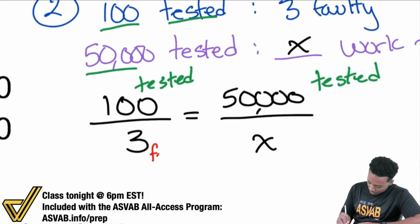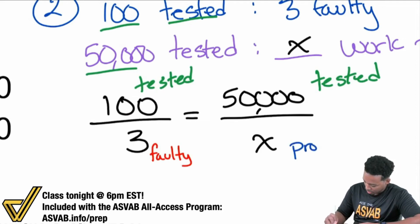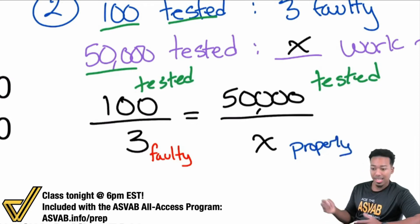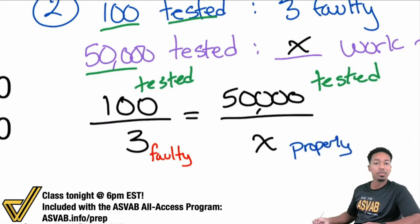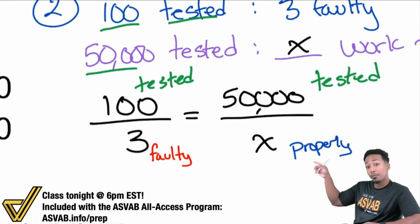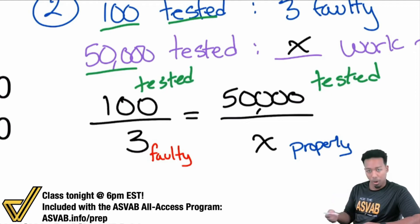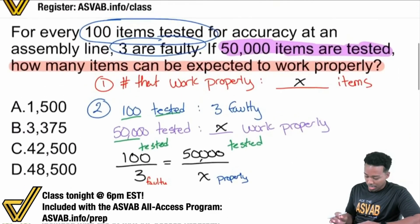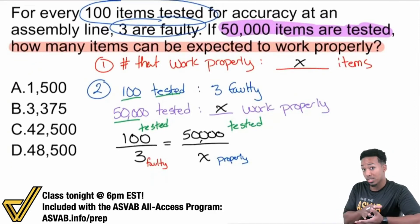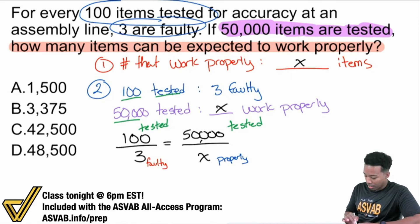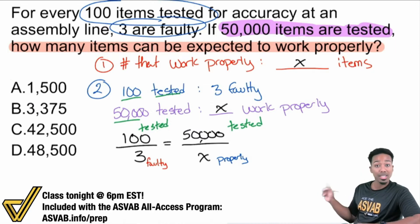Faulty on one side, and then the ones that work properly on the other — that's not good. We're not comparing the same things in the same way. If you were to solve this proportion, the number you would get would actually represent the number of faulty items at that quantity. So because of that, if we don't set it up correctly, the answer is wrong automatically. It would have been 1,500 if you used that proportion.